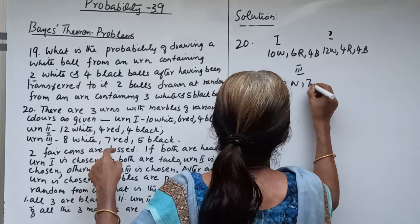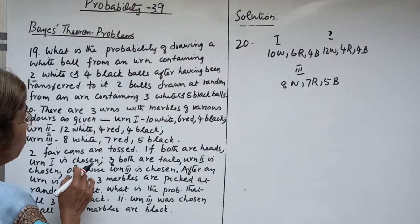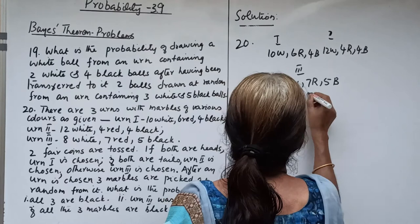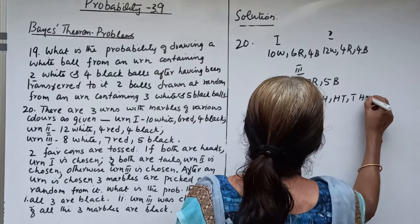Two fair coins are tossed. The sample space is HH, HT, TH, TT. If both coins show heads (HH), urn 1 is chosen. If both are tails (TT), urn 2 is chosen. Otherwise, if one head is obtained — that is HT or TH — urn 3 is chosen.